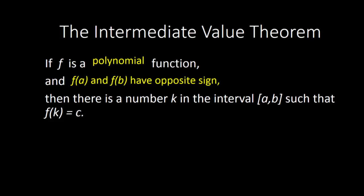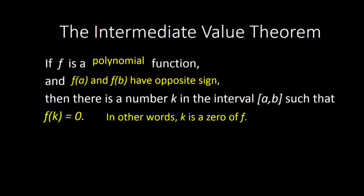Instead of picking just some random y value, let's specifically look at the case where the y value is zero. These modifications have not changed the Intermediate Value Theorem — we're just looking at a specific case of it as it pertains to polynomial functions. So now our statement is: if we have a polynomial function and f of a and f of b have opposite sign, then somewhere between a and b there's an x value such that f evaluated at that number is equal to zero. In other words, we find a zero.